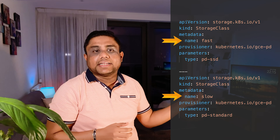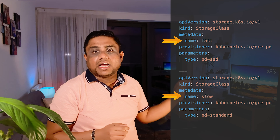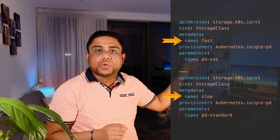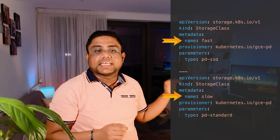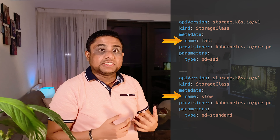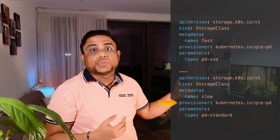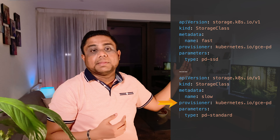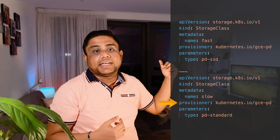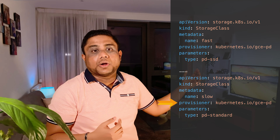When you want to define a storage class you use the kind StorageClass. Under metadata you provide the storage class name. Here are two examples: the first one is slow and the second one is fast. The parameters need to be different between these two storage classes.